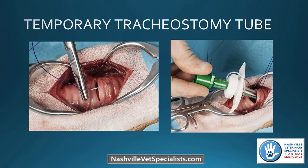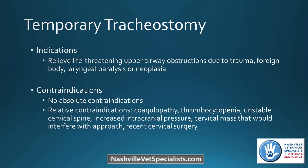Now we'll talk about temporary tracheostomy tube placement. Indications include life-threatening upper airway obstructions — commonly seen in brachycephalic patients, as well as foreign bodies lodged in the trachea, laryngeal paralysis, or a large mass on the larynx. Similar to other procedures, there are no absolute contraindications. Relative contraindications such as recent neck surgery or increased intracranial pressure might give you pause, but in a life-threatening situation those go out the door.